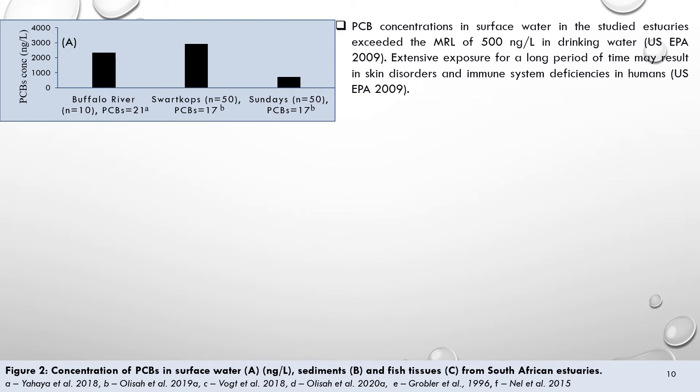This is a graph showing the concentration of PCBs in surface water from South African estuaries. PCB levels have been detected in surface water from Swartkops, Buffalo River and Sundays estuaries. Levels of PCBs recorded in Swartkops estuary were higher than those reported for Buffalo and Sundays estuaries. PCB levels in surface water from all studied estuaries exceeded the maximum residual limit of 500 ng per litre in drinking water. Extensive exposure over a long period of time may result in skin disorders and immune system deficiencies in humans.